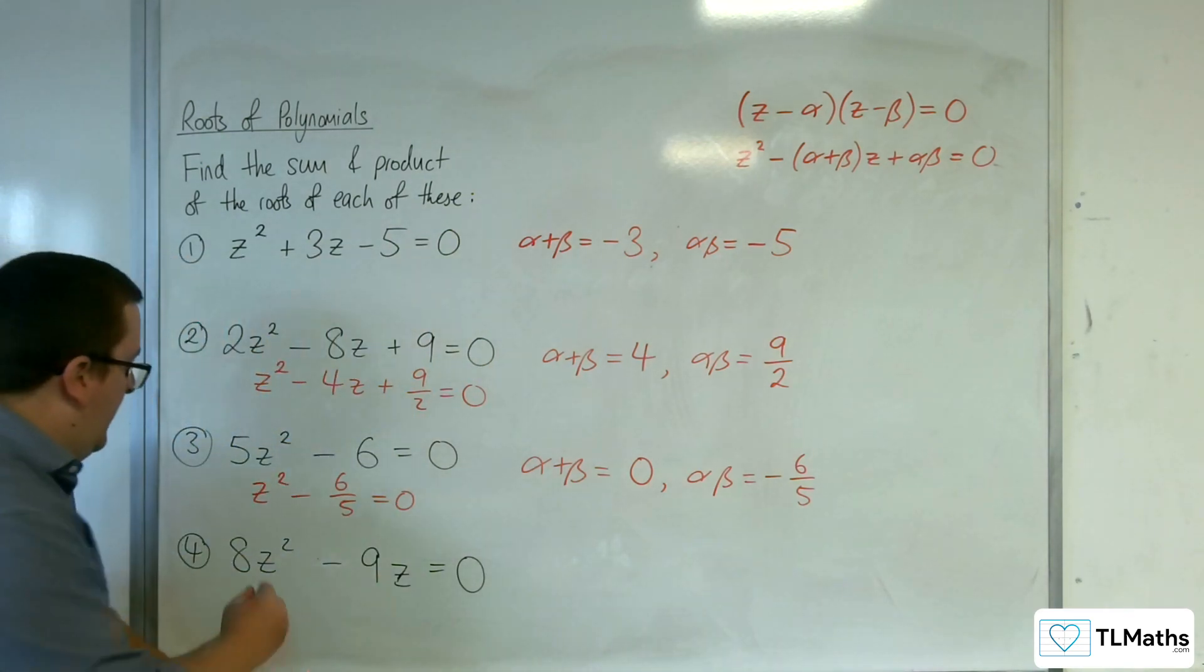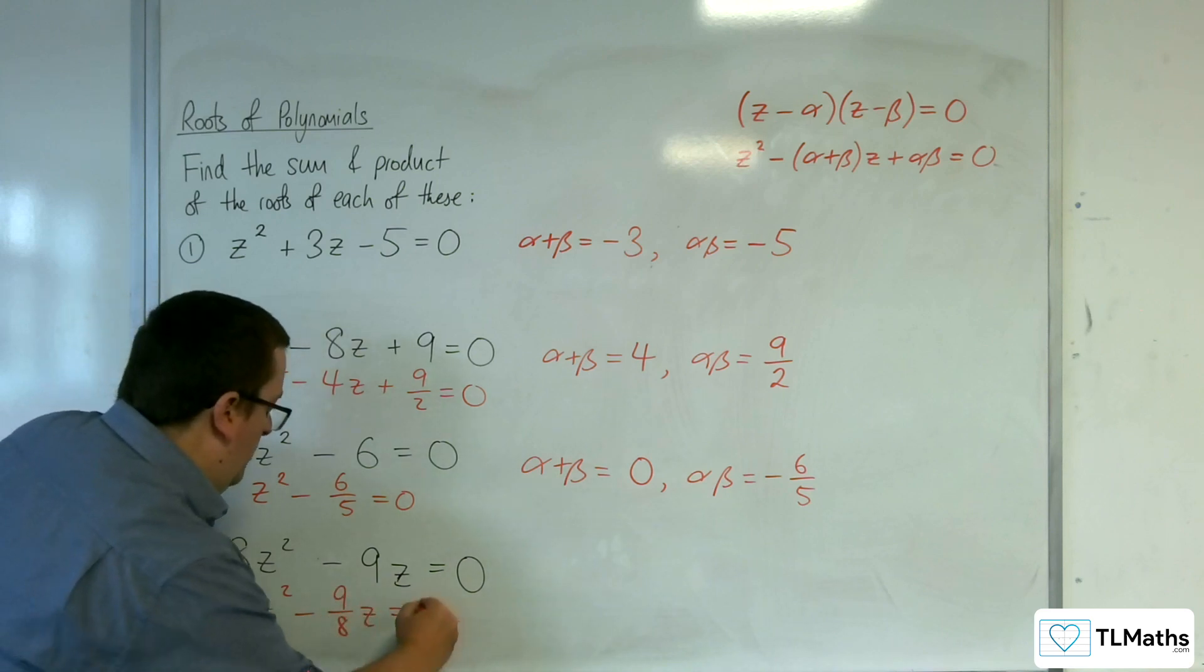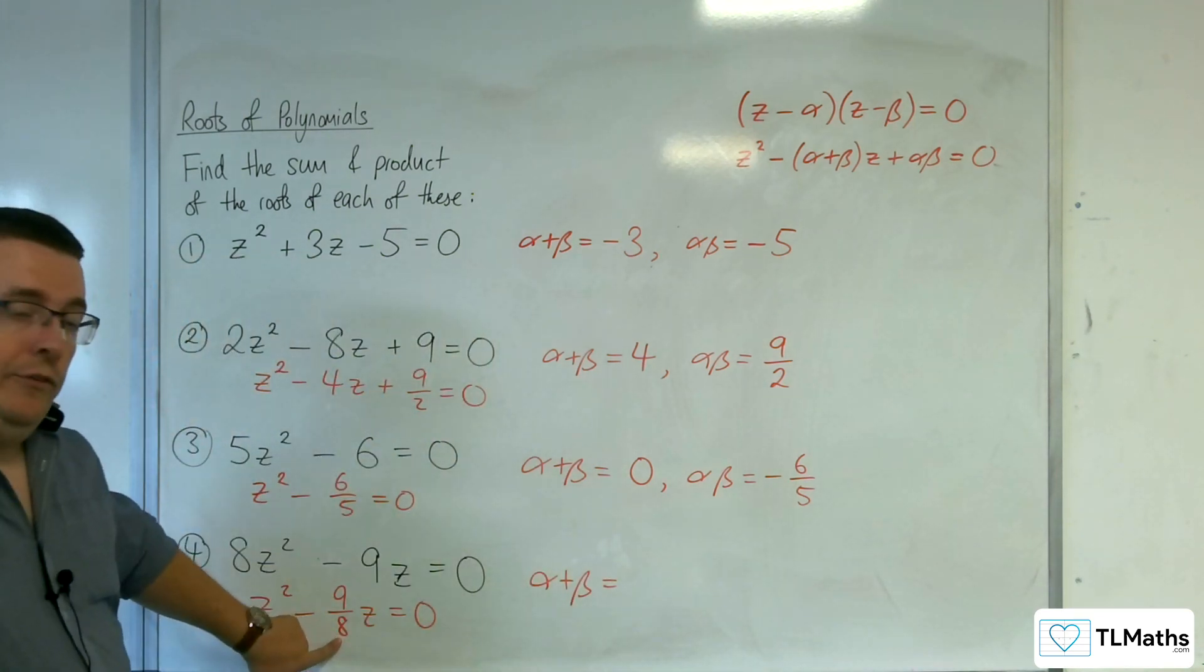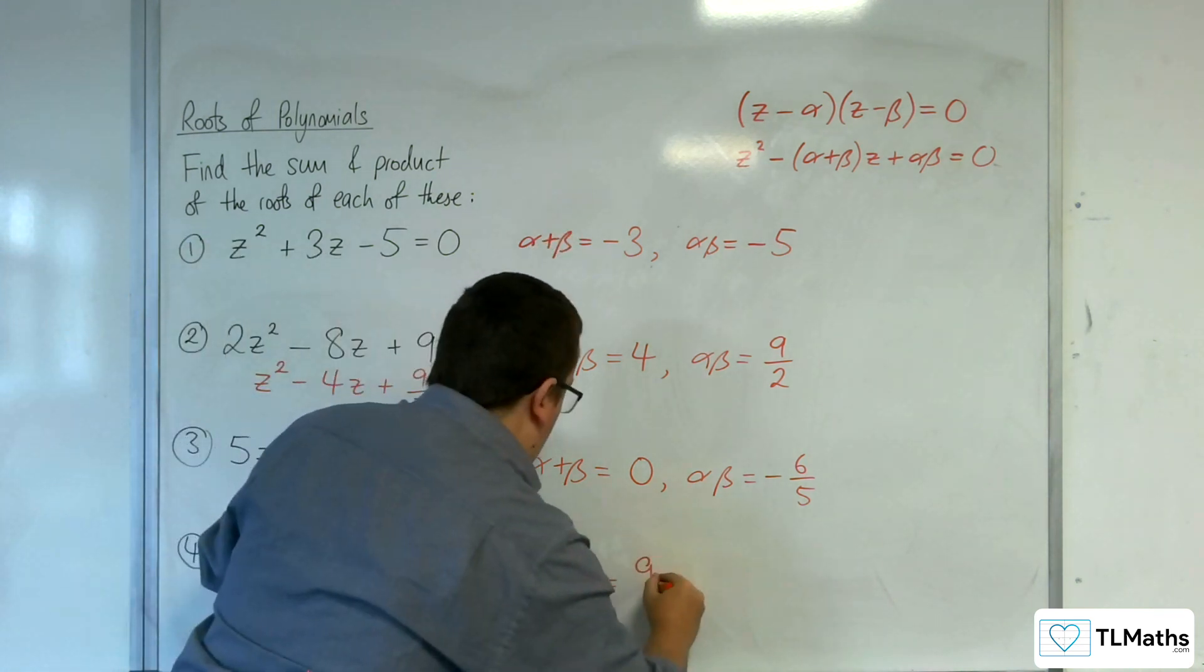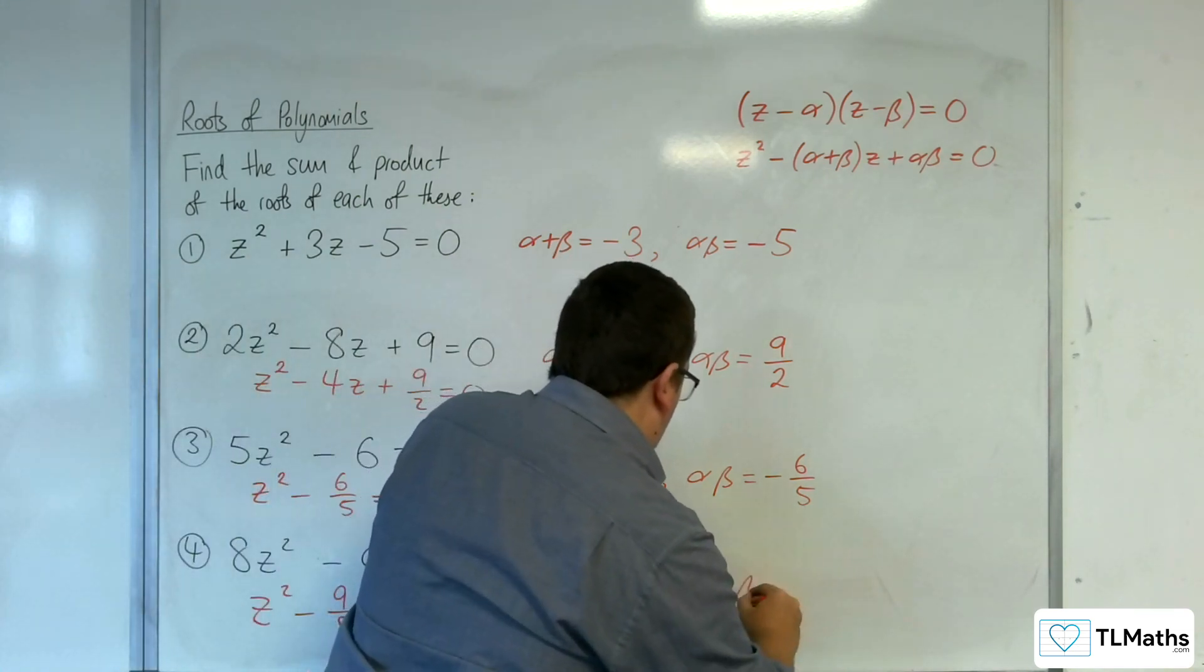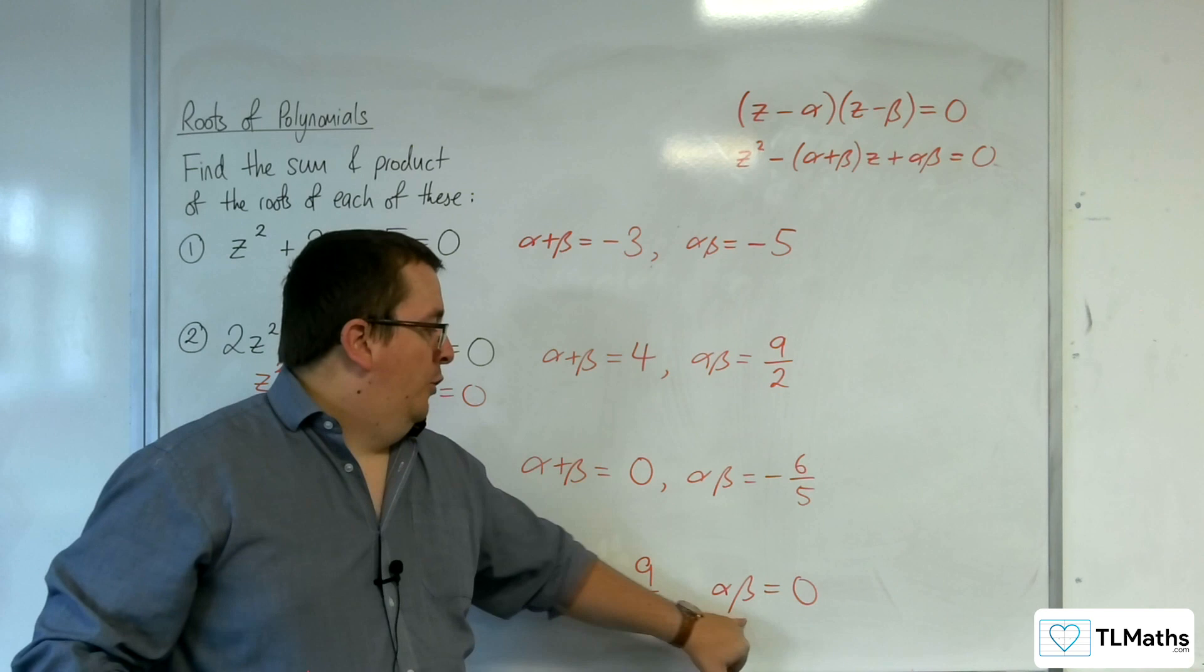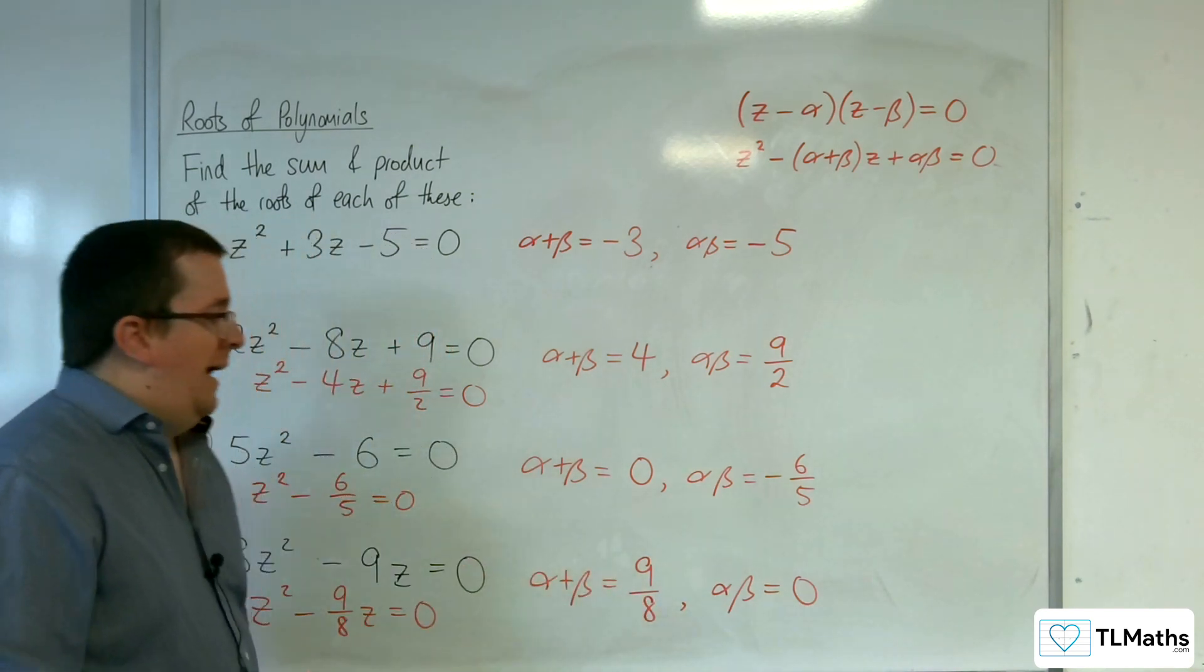Last one, I need to divide through by the 8 first. So z squared take away 9 eighths z equals 0. So the alpha plus beta has to be the 9 eighths. What's in front of the z there? Minus is already taken care of, so that's 9 eighths. And alpha beta must be 0, because there's nothing on the end. So this means that 1 of either alpha or beta must be 0 in order for that to be the case and for them to add to 9 eighths.